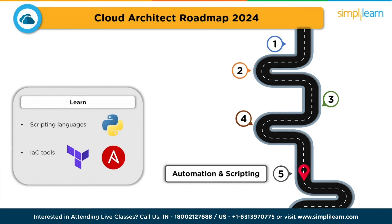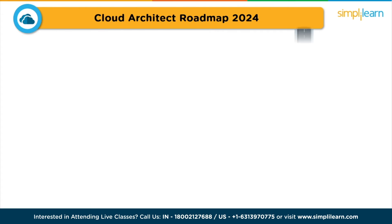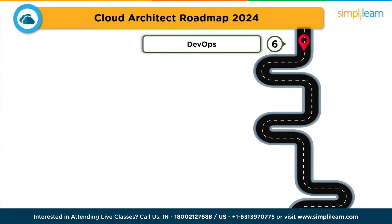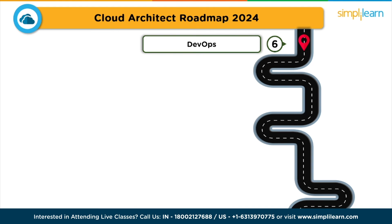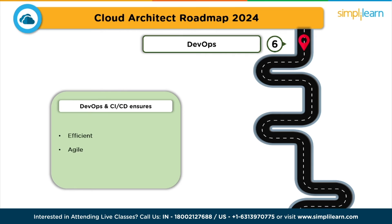The sixth step is DevOps and CI/CD pipelines. Embrace DevOps practices to bridge the gap between development and operations. Understand CI/CD pipelines, which automate application builds, testing, and deployment. DevOps and CI/CD ensure efficient, agile, and error-free software delivery in the cloud environment.